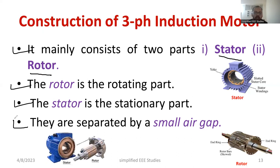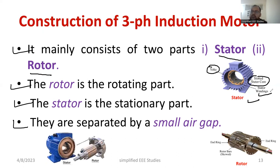You can observe the diagram here. This is a typical view of the stator. We have the outer covering called the yoke, and then we have the slotted stator core with the stator winding. The stator winding can be done in either star connection or delta connection, depending on the requirement.